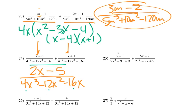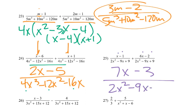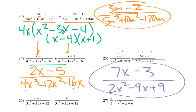Number 25, same denominator. x and 6x give 7x. Negative 1 and negative 2 give minus 3, over 2x squared minus 9x plus 9. I could try to factor — these ones are harder to factor, but you could graph it and find the zeros and work backwards to the factors. It would only matter if the denominator factored to give 7x minus 3, which it won't, so we'll leave it like that.